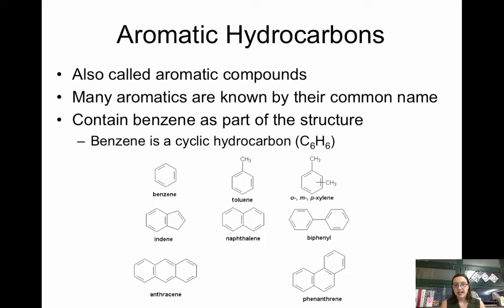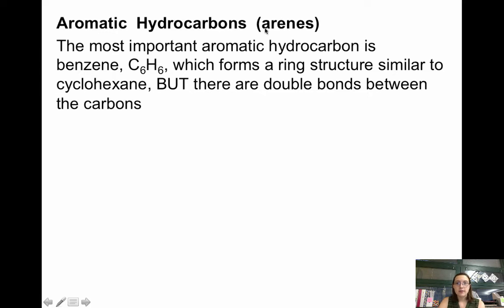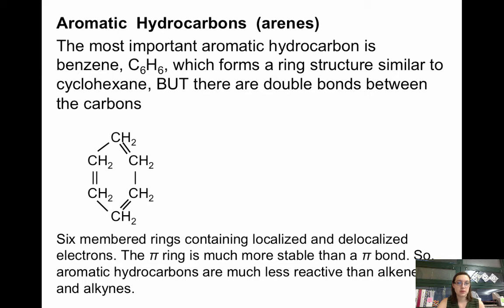Every aromatic hydrocarbon contains benzene as part of the structure. Benzene is a cyclic hydrocarbon — essentially a cycloalkene because it has double bonds in it. Benzene is C6H6. Aromatic hydrocarbons are also called arenes, and the most important aromatic hydrocarbon is benzene.